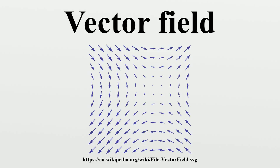Vector fields can usefully be thought of as representing the velocity of a moving flow in space, and this physical intuition leads to notions such as the divergence and curl.